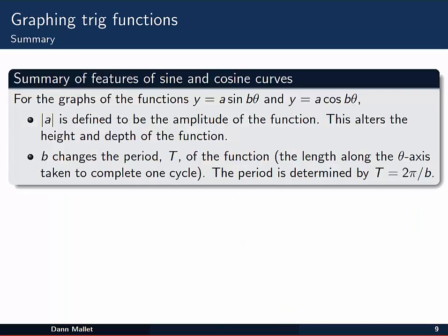In summary, for the graphs of the functions y equal to a sine b theta and y equal to a cos b theta, the absolute value of a is the amplitude of the function, and it alters the height and depth of the function. b changes the period T of the function, that's the length along the theta axis or horizontal axis taken to complete one full cycle of the curve. The period is determined by the formula T equals 2 pi over b.